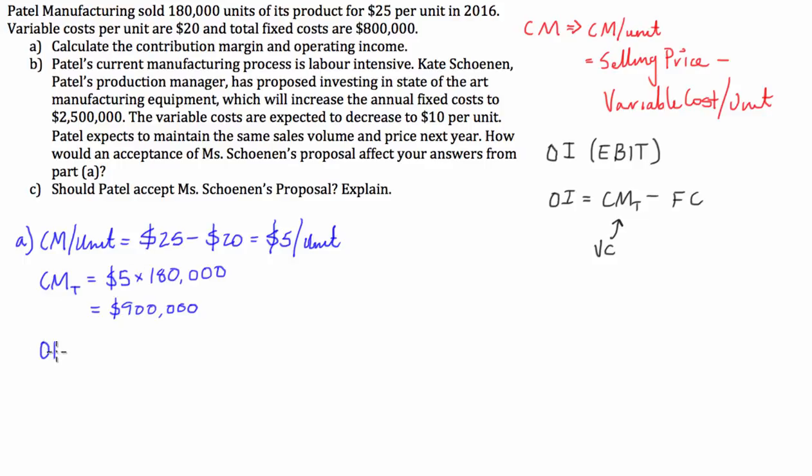So our operating income is equal to our total contribution margin, which is $900,000, subtract our total fixed costs, which is $800,000. And that is equal to $100,000. So the company's operating income is equal to $100,000. So that's part A done. And it's important to be able to get the definitions or the formulas for contribution margin and operating income, gross profit, and all these different things sort of embedded in your skull. And the only way you can do that is by just going over and over questions like this until you're blue in the face.